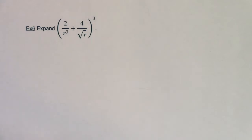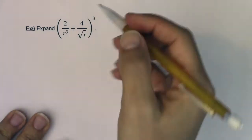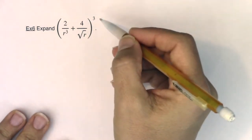Hey Math 31, let's take a look at example 6. So we're going to expand a much uglier looking binomial than we've expanded before and I have a degree 3 here.